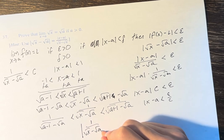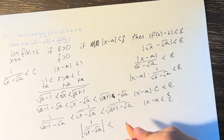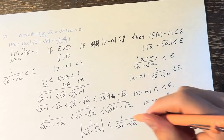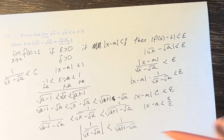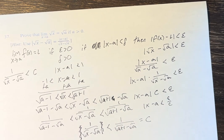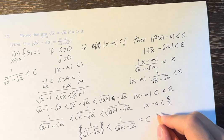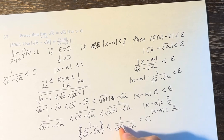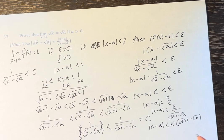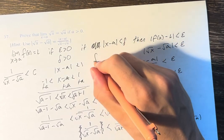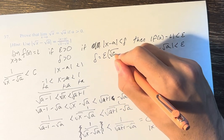Therefore, the absolute value of 1 over (√x - √a) is less than 1 over (√(a+1) - √a), since that represents the greatest absolute value in the range. So we set c equal to 1 over (√(a+1) - √a). Therefore |x - a| is less than epsilon over c, which equals epsilon times (√(a+1) - √a). So delta equals epsilon times (√(a+1) - √a).